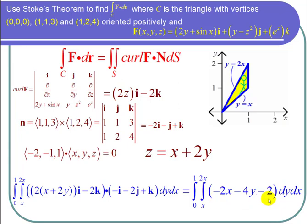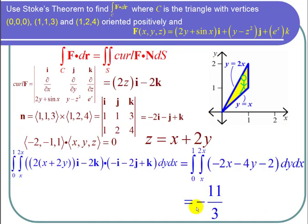And this integral is not too difficult, but I worked it out by a calculator to save a little time. And what I got was negative 11 thirds. So I can conclude that the line integral over c of f dot dr is equal to negative 11 thirds.